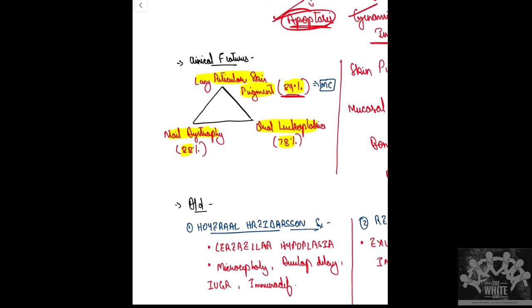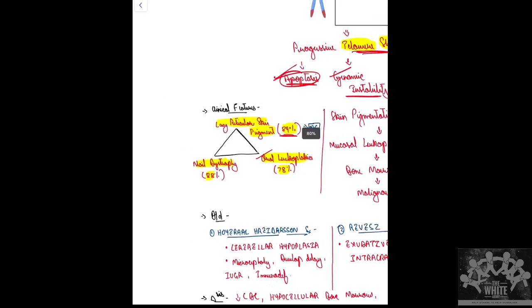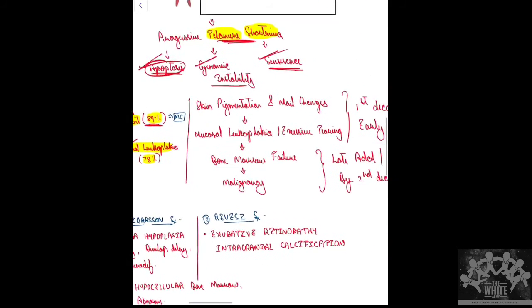To diagnose Dyskeratosis Congenita, any two of the three triad features along with bone marrow failure is sufficient. Bone marrow failure occurs at a later age because of progressive telomere shortening, so any two of the three triad features can establish the diagnosis.